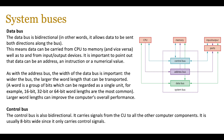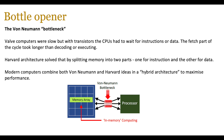The control bus is also bidirectional, carrying signals from the control unit to all other computer components. It's usually 8 bits wide since it only carries control signals, so there's no need for a wider bandwidth. The von Neumann bottleneck was not an issue when processors were very slow, but as CPUs became faster they had to wait for instructions or data — the fetch part of the cycle takes much longer than decoding or executing. Harvard architecture solved this by splitting memory into two parts: one for instructions and one for data. Modern computers combine both von Neumann and Harvard ideas in a hybrid architecture to maximize performance.